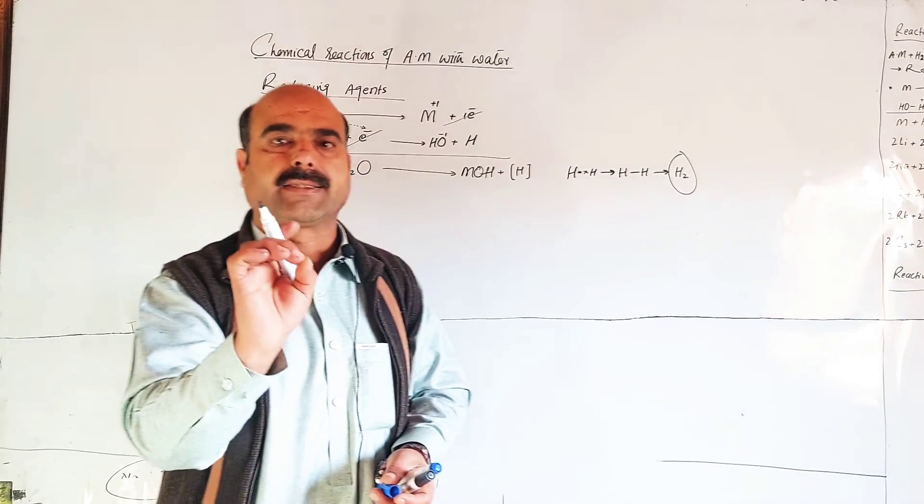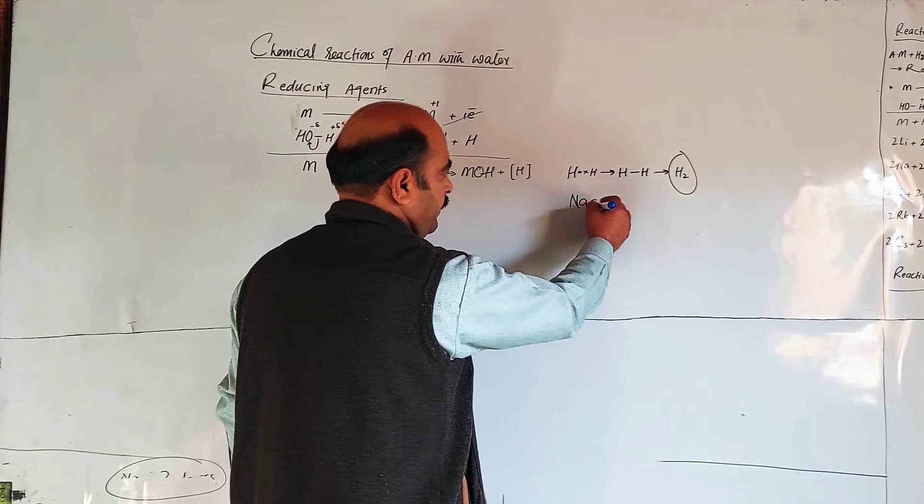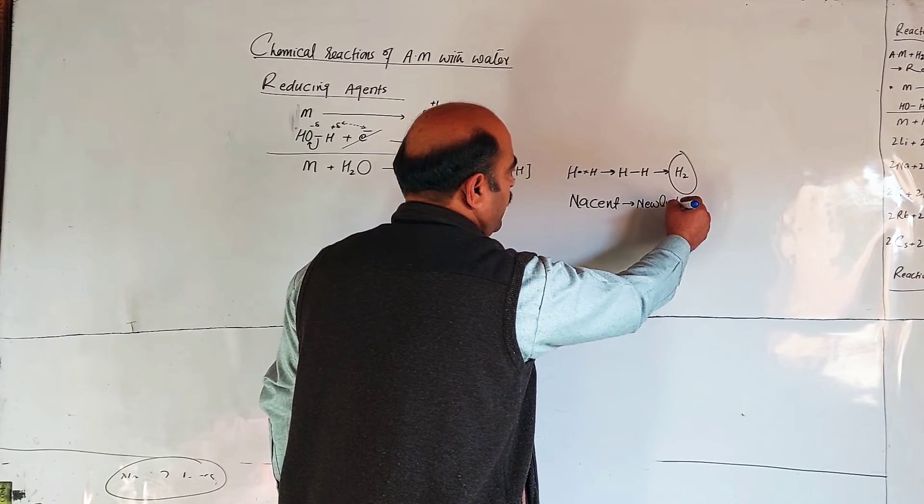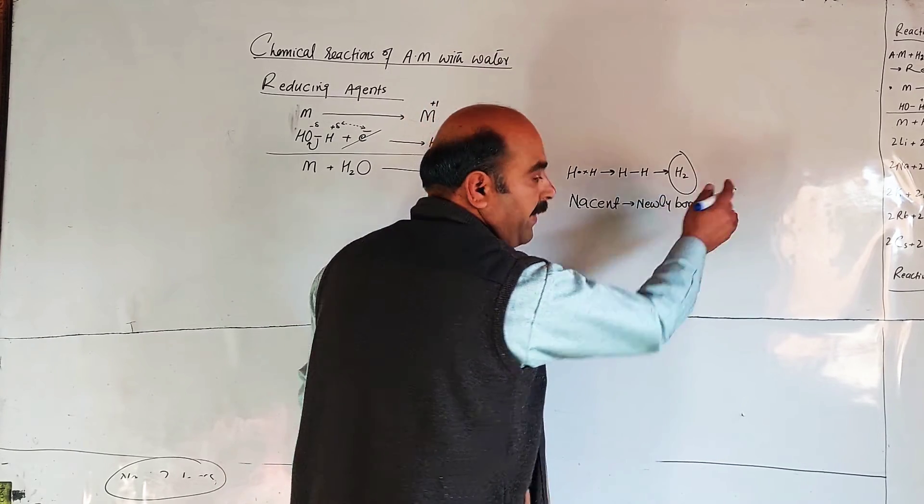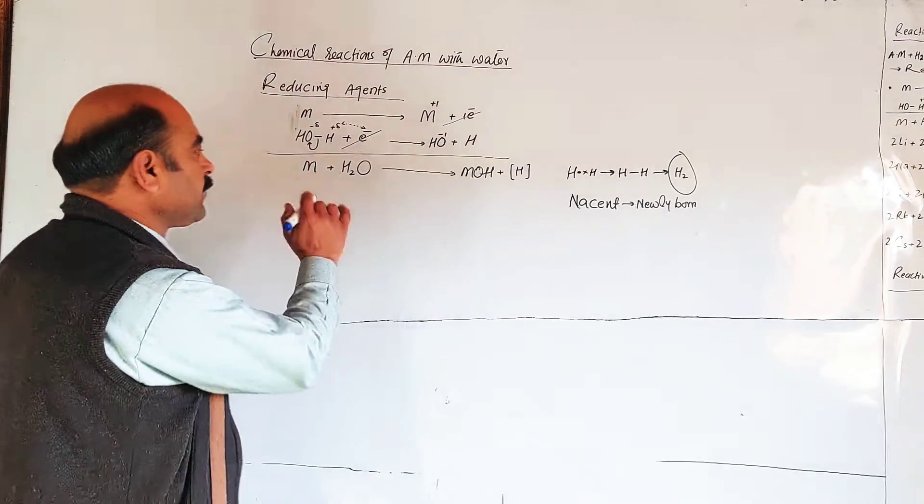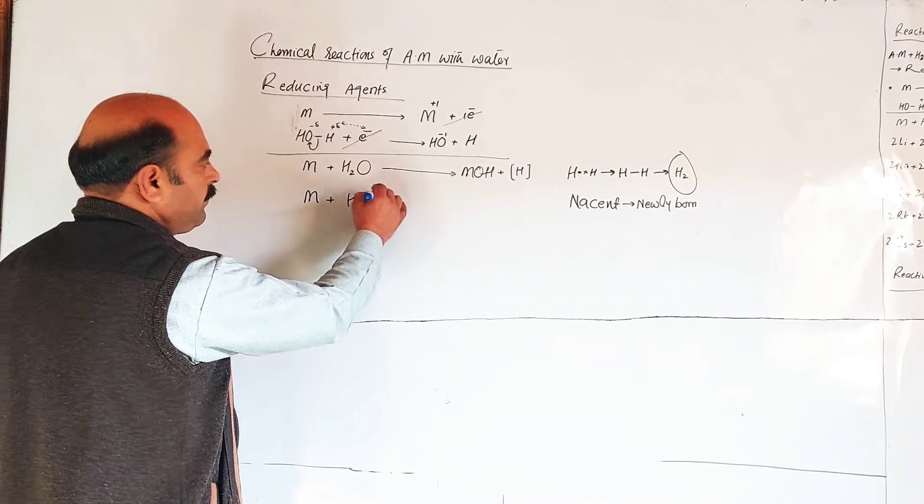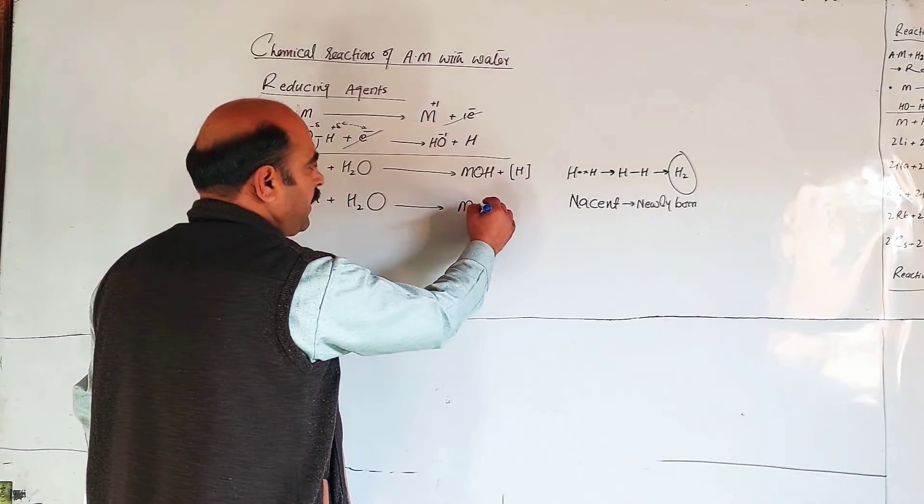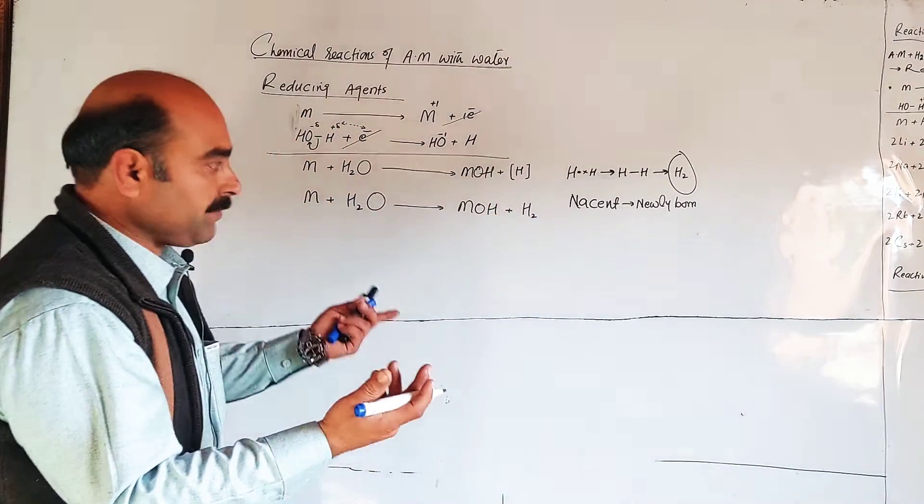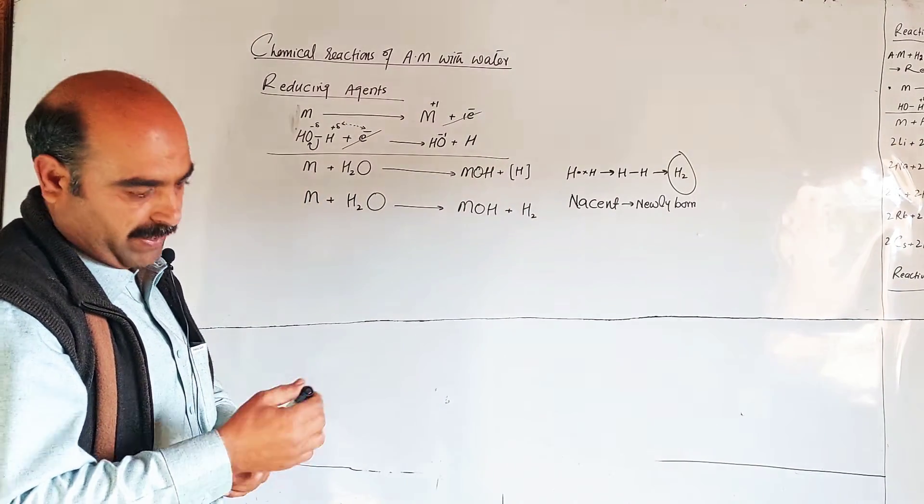Nascent means newly born. Newly formed atomic hydrogen quickly converts to molecular form. So M plus H2O forms MOH metal hydroxide plus H2.